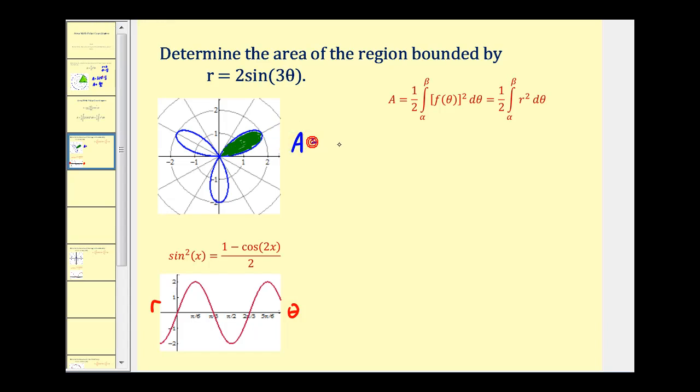The area is going to equal three times one half times the definite integral from alpha to beta. And let's take a look at how we're going to determine alpha and beta. And this is why this graph here becomes very helpful. Notice when theta is equal to zero, the radius is zero, so we're at the pole. And then as we increase theta, r reaches a maximum of two at pi over six, which would be this point right here. And then r decreases back to zero right at pi over three. So when theta is between zero and pi over three, it starts at zero, increases to two, and then decreases back to zero, forming this green petal. So our limits of integration will be from zero to pi over three.